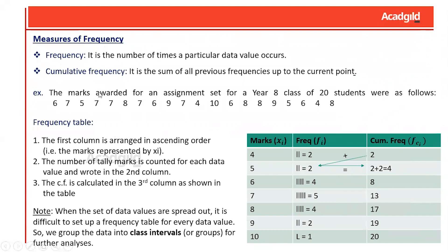Measures of frequency involves the creation of a frequency table where we calculate the frequency and the cumulative frequencies with respect to each data value. Frequency is the number of times a data value occurs, and cumulative frequency is the sum of all previous frequencies up to that point. The following example depicts the marks scored by 20 students in an exam.